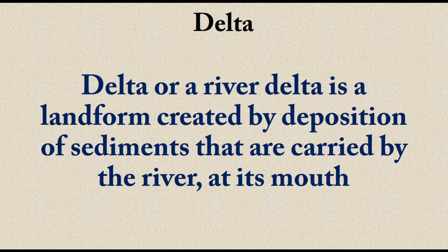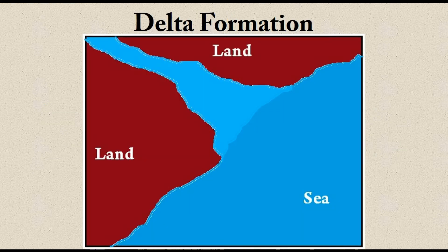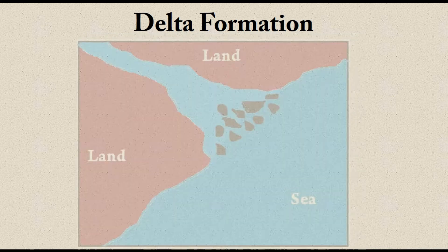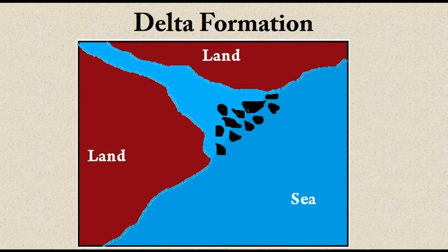Finally, these sediments are deposited in the third stage. Whatever remains is carried to the mouth — the last place the river can deposit sediments on the surface. The river starts depositing sediments at its mouth, and over a long period of time, due to continuous deposition, these sediments accumulate. Over hundreds of years, these accumulated sediments become new landforms — new islands.